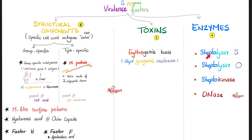We have four enzymes. Streptolysin S — a hemolysin. Streptolysin O — another hemolysin. Streptokinase — a fibrinolysin. And DNase. Hemolysin breaks down red blood cells. Streptokinase is the famous TPA — tissue plasminogen activator — the natural form. The artificial forms are alteplase, tenecteplase, and others. They are used clinically as clot busters, fibrinolytic agents, thrombolytic agents — in case you have a stroke or heart attack. And DNase will break down DNA.